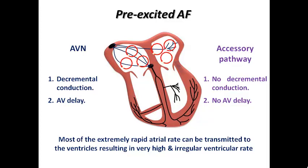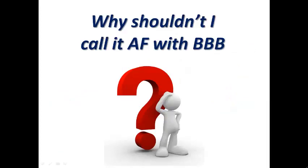So this patient has AF, but the AV node's protective mechanism is overcome by the accessory pathway — a malignant conductive pathway transmitting most of these atrial impulses to the ventricles. Now the question is: why shouldn't I call it AF with bundle branch block appearance? Maybe this patient has atrial fibrillation with a pre-existing bundle branch block due to structural heart disease, or a rate-dependent bundle branch block — more commonly right bundle — causing irregular wide complex tachycardia.